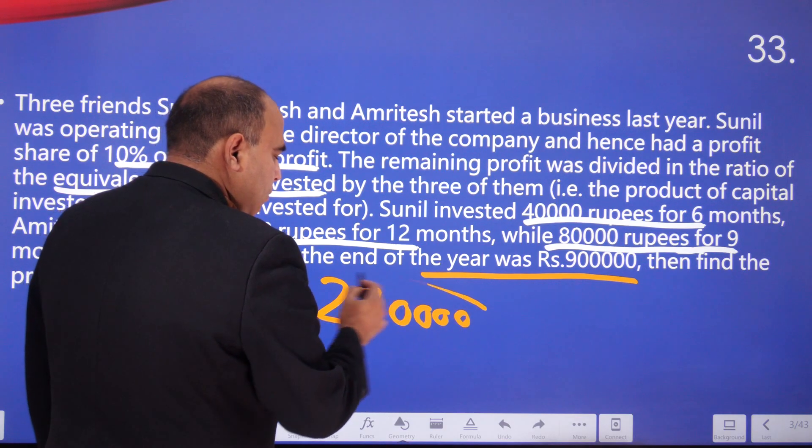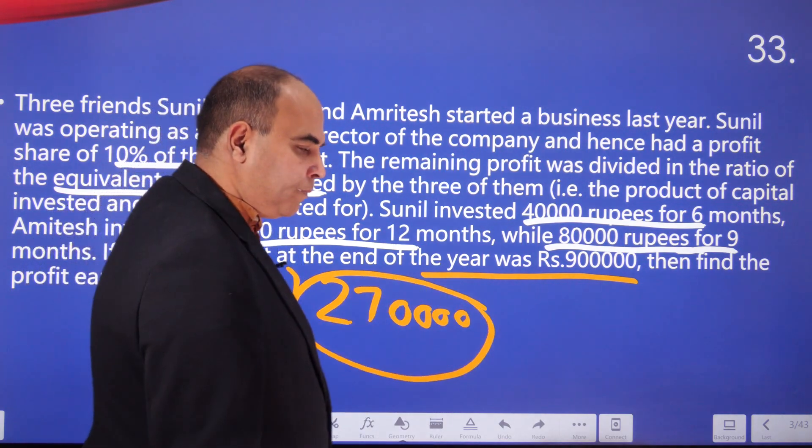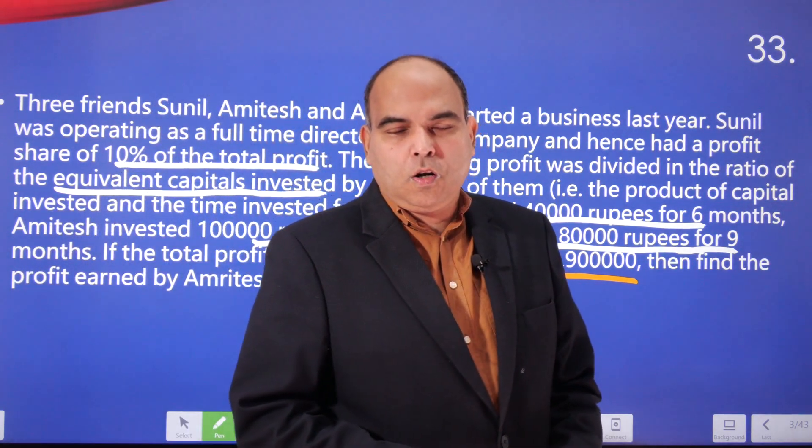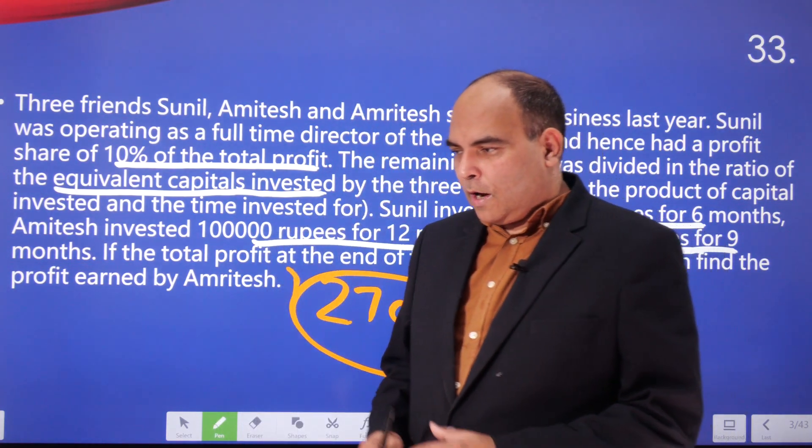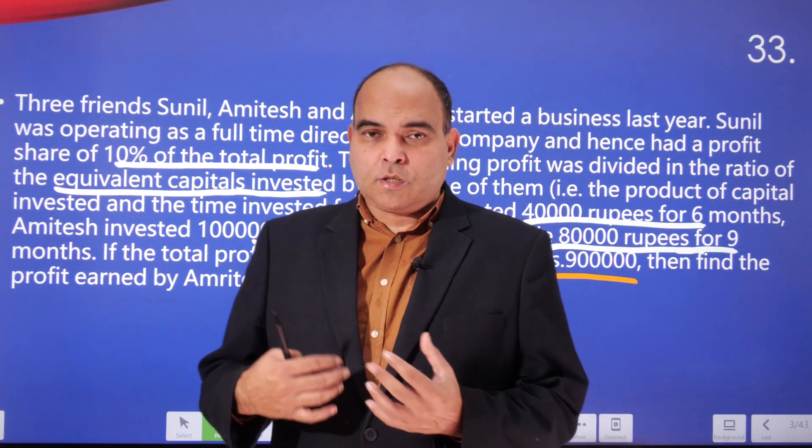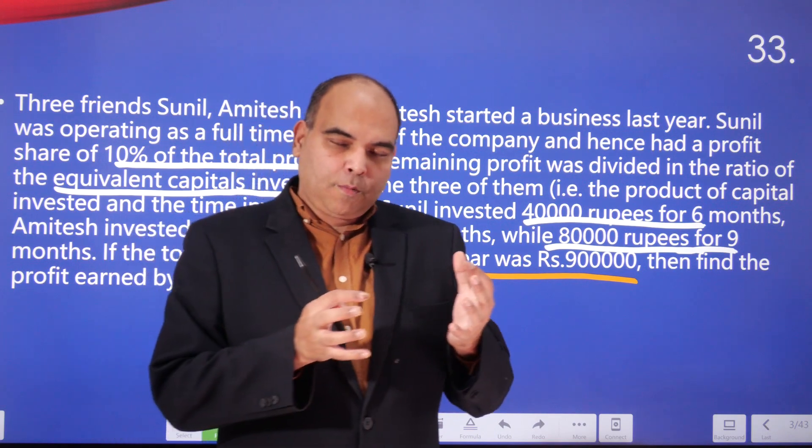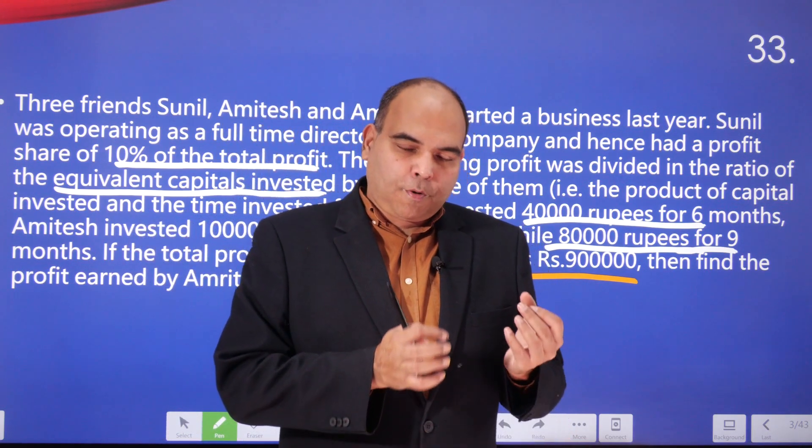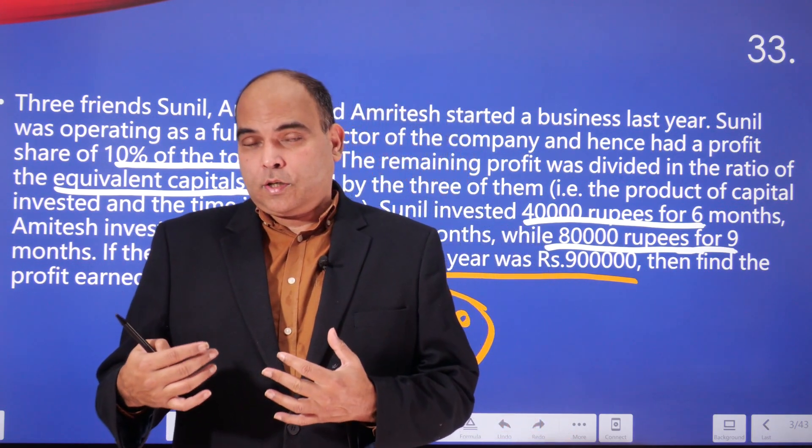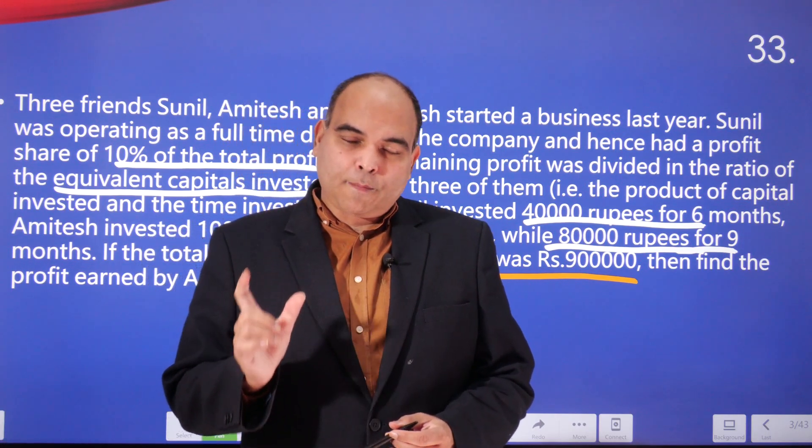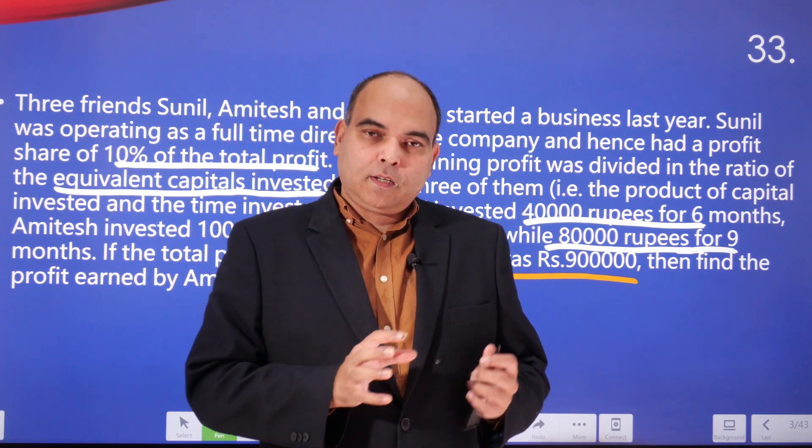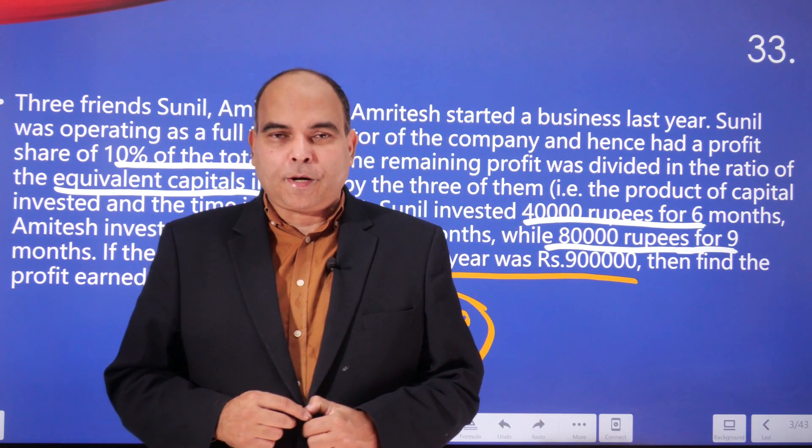This is a standard approach in all partnership questions. You have to remove the profit which is to be distributed to the partners, then you get the profit for distribution. The profit for distribution is distributed in the context of equivalent capitals, and equivalent capitals are got by multiplying the money invested into the time invested for. It's standard practice in partnerships.